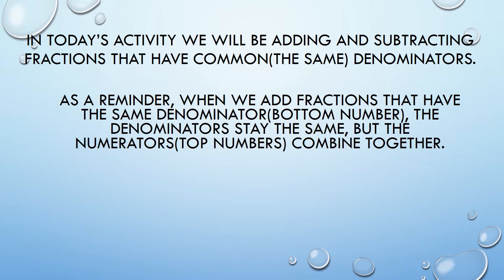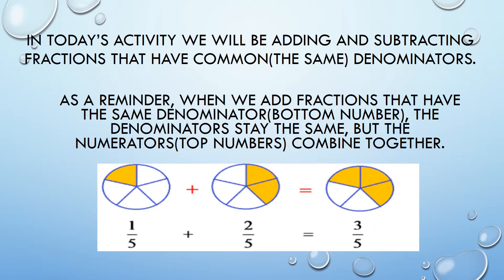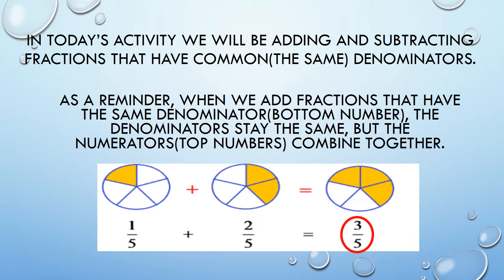As a reminder, when we add fractions that have the same denominator, or bottom number, the denominators stay the same. But the numerators, the top numbers, combine together. Here's an example: one-fifth plus two-fifths equals three-fifths. You'll notice that the denominator stayed the same — it stayed as five. However, the top number became a three because one plus two equals three.